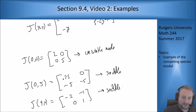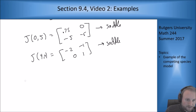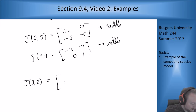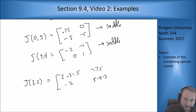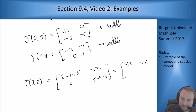Now I just want to check the intersection point. If I plug in (3, 2), what I get from my matrix is [minus 2, minus 0.5; minus 0.75, minus 0.75].